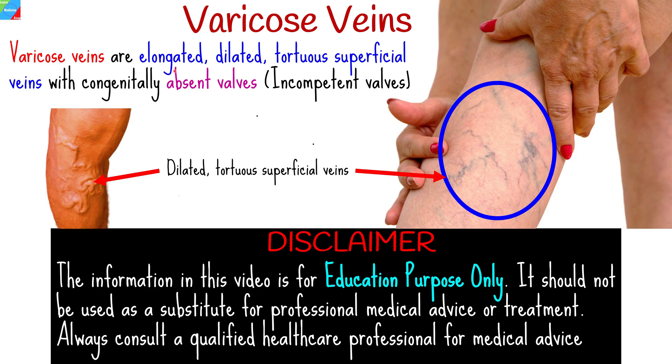Varicose veins are elongated, dilated, tortuous superficial veins with congenitally absent valves, or valves that have become incompetent.